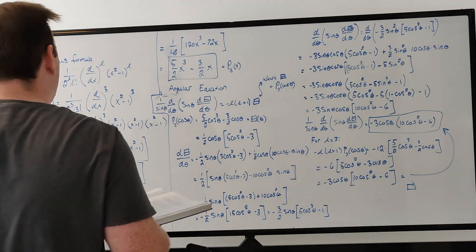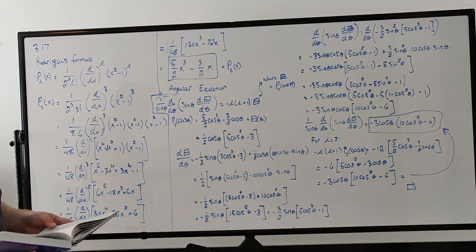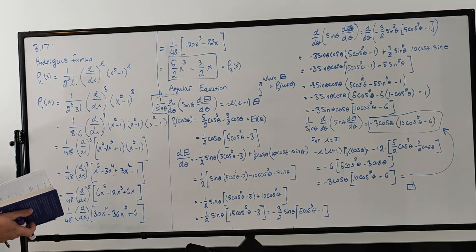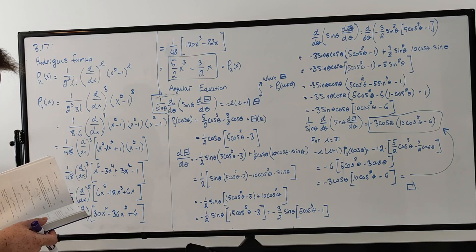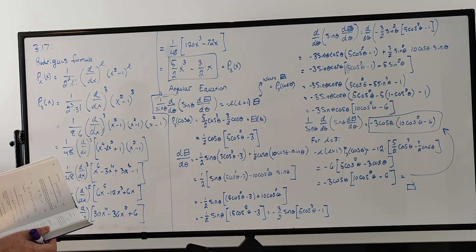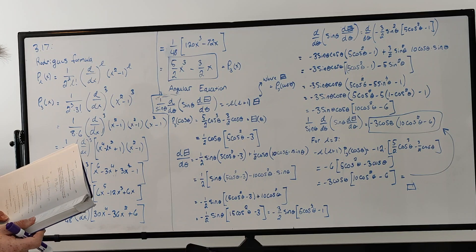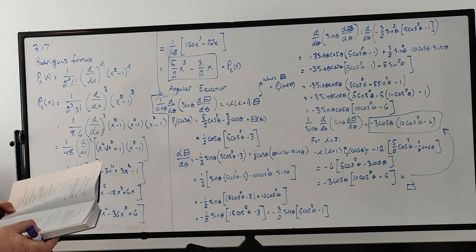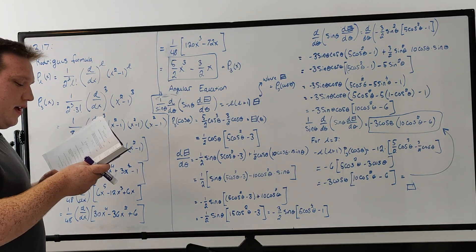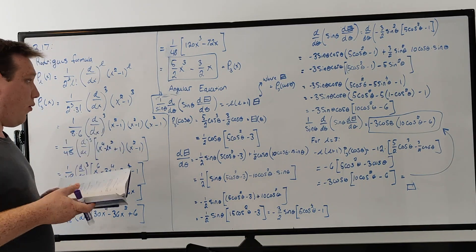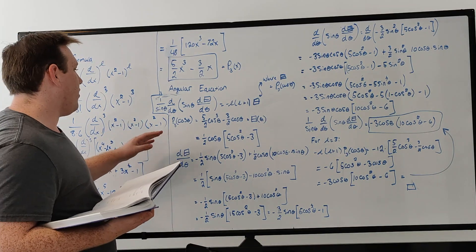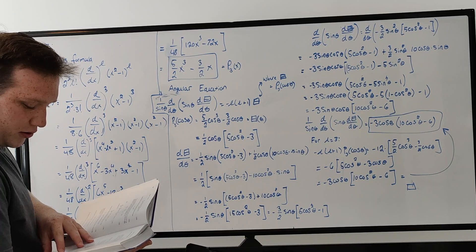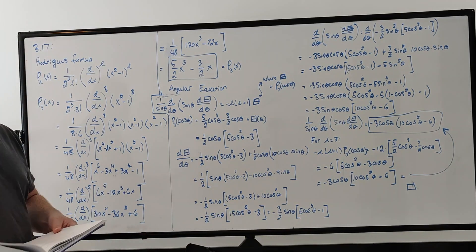Hello everyone, welcome to problem 3.17 of David Griffith's Electrodynamics. This problem asks us to derive the third Legendre polynomial from Rodriguez's formula, check that it satisfies the angular equation for which the Legendre polynomials are solutions, and also check that P3 and P1 are orthogonal by explicit integration.